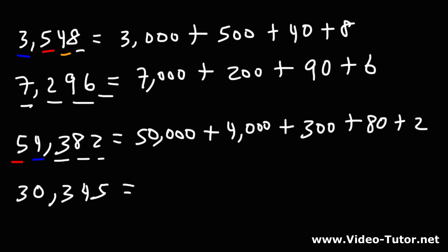Now what about the next one? 30,345. The 3 is in the ten thousands place, so 3 times 10,000 is 30,000. If you have a 0, you could just skip it. There's nothing there.